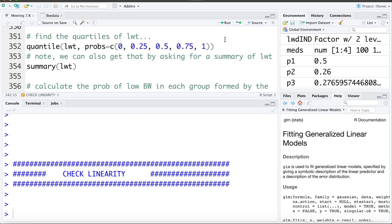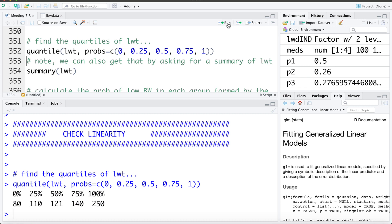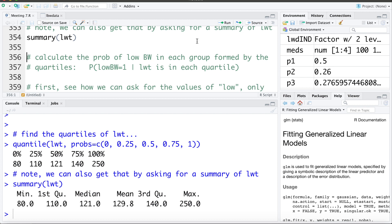To do so I'm going to take the LWT variable and break it into four separate groups based on the quartiles of the variable. To find the quartiles of LWT we can use the following command, asking for the minimum, first quartile, median, third quartile, and maximum for LWT. We can see those there. And it's also worth noting that we can use the summary command to get those same quartiles. So the first group of LWT is going to be those with weights between 80 and 110 pounds. The second group 110 to 121, the third group 121 to 140, and the fourth group 140 to 250.